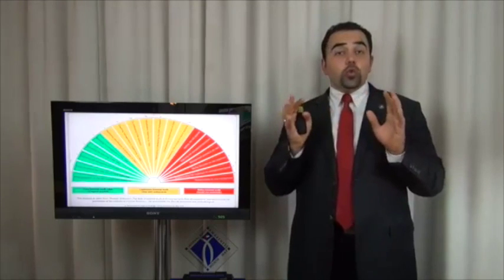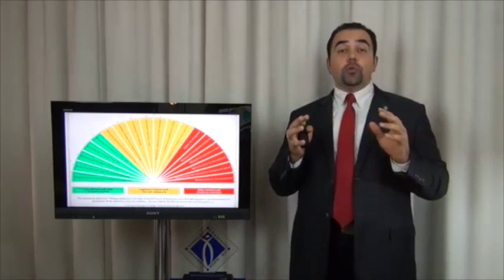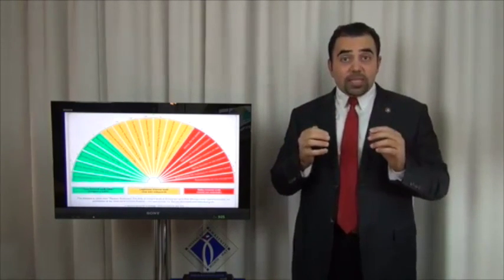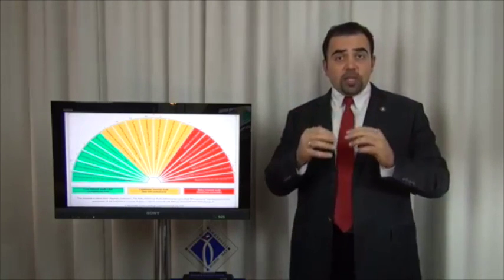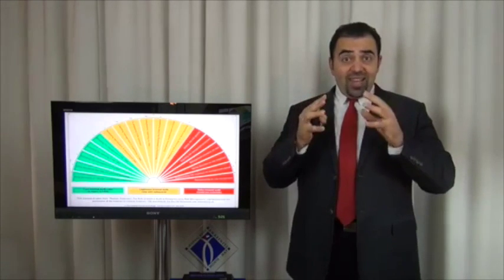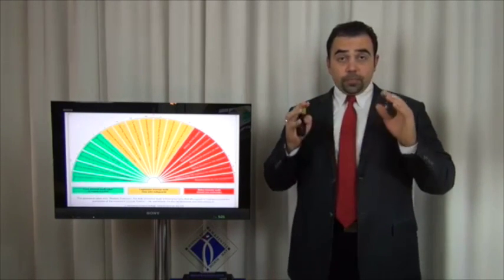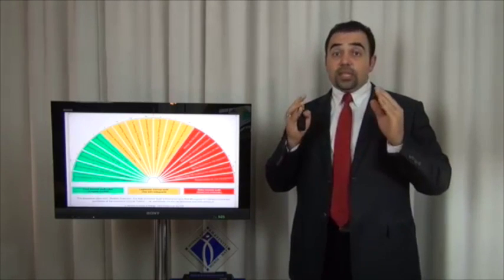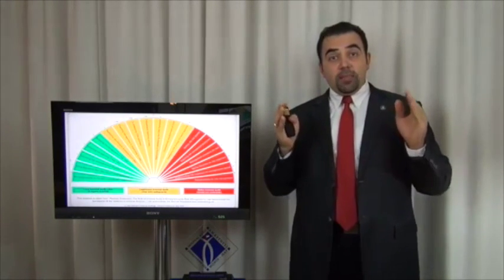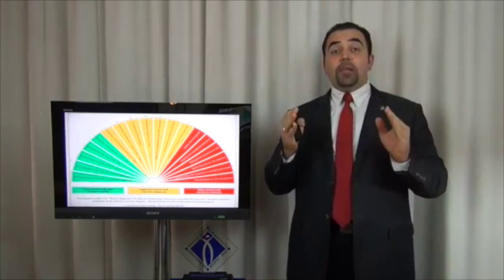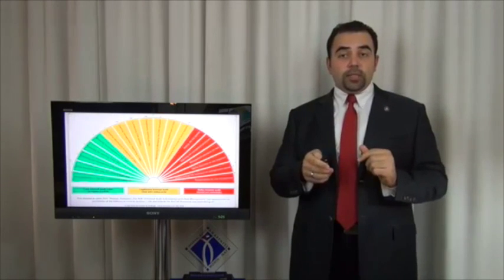What you should not do as an internal auditor: you should not provide assurance on the risks themselves, you should not implement the risk management process, and you should not design the risk management process. Establishing the risk management process is the responsibility of senior management, and implementing it is the responsibility of management.